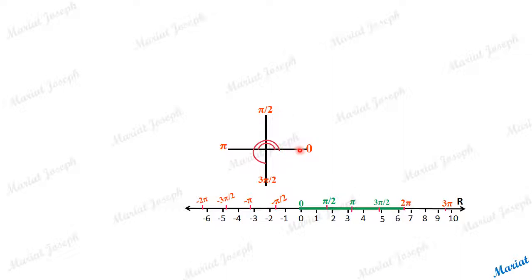The special radian values plotted are: 0 radian, pi by 2 radian, pi radian, 3pi by 2 radian, 2pi radian, 3pi radian, 4pi radian, and so on.